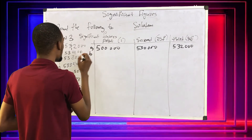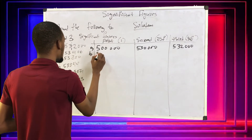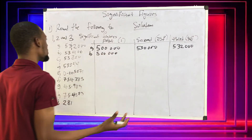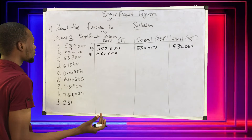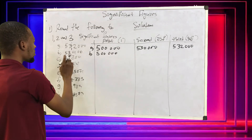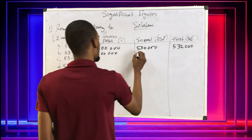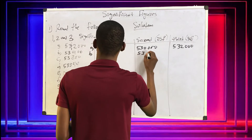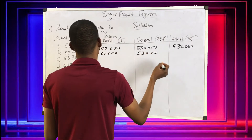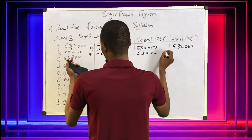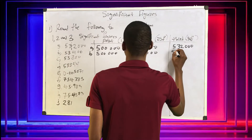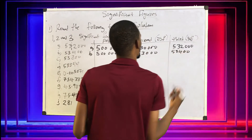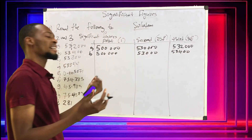B: the number is 51213. To one significant figure: 50000. To two significant figures: 51000, because the next digit after 1 rounds down. To three significant figures: 51200.